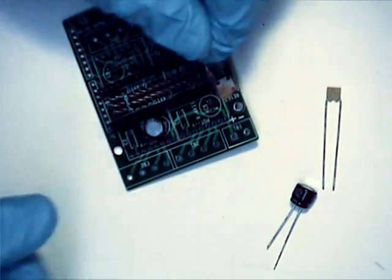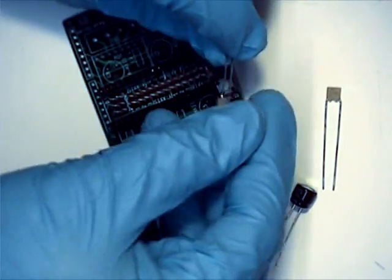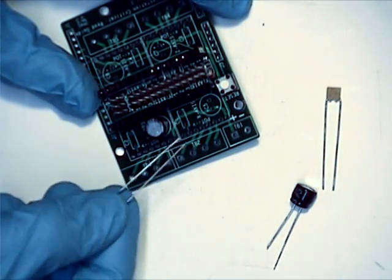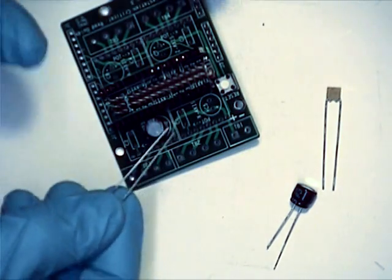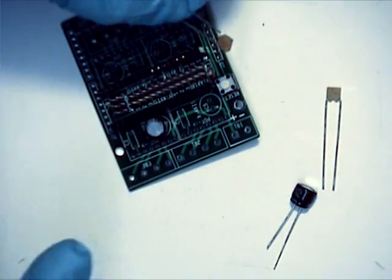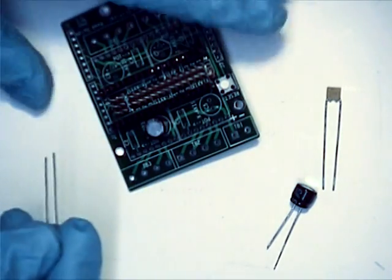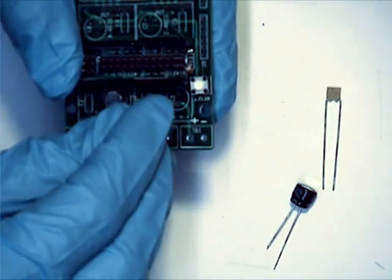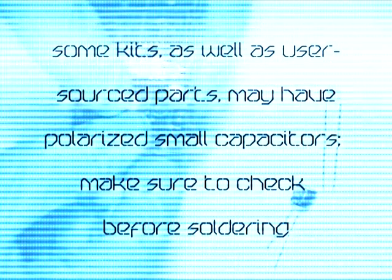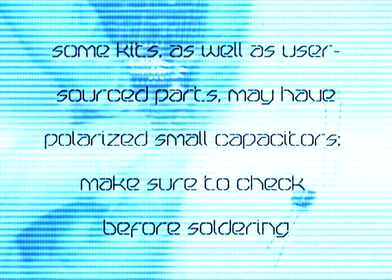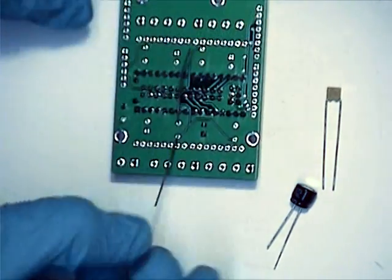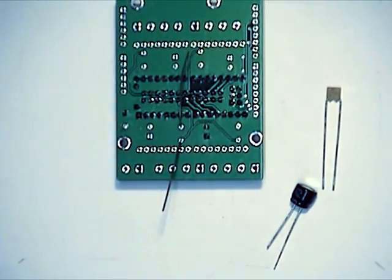Now, the ceramic capacitor, notice it does not have one leg longer than the other. They are both the same length. That is because this capacitor is not polarized. Most ceramics aren't. It may be that no ceramics aren't. I can't recall. But, just so long as it gets slotted in, bend it down, and shore it up.